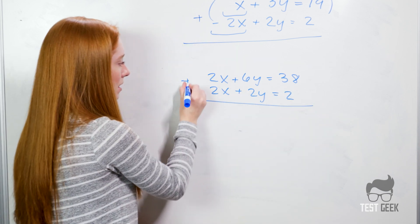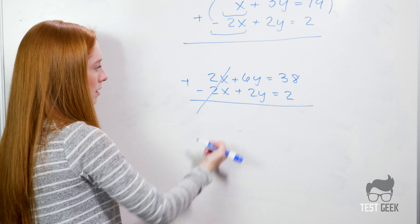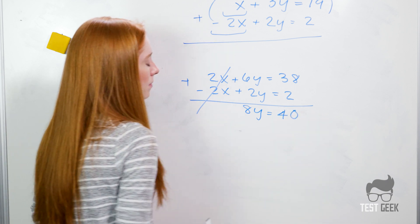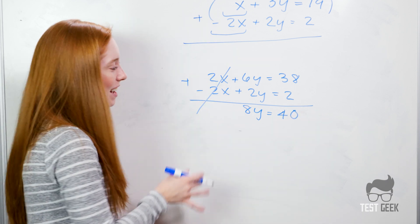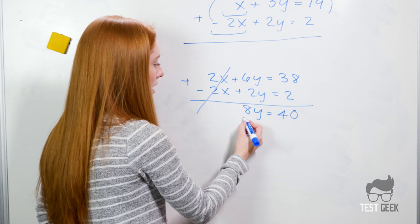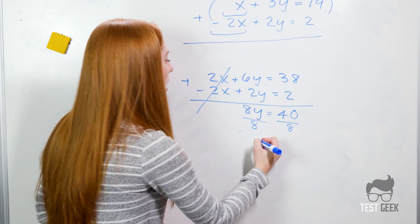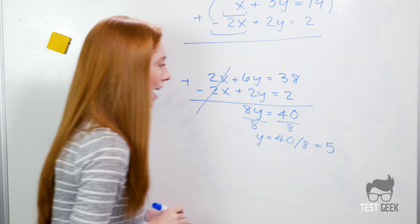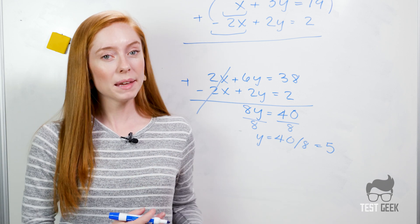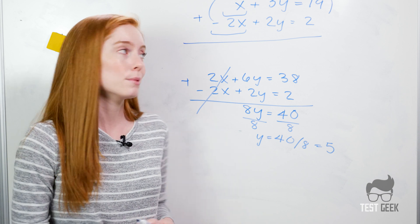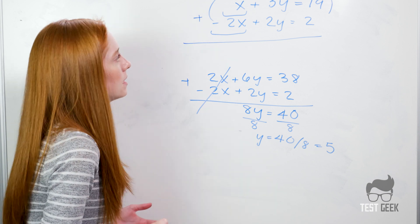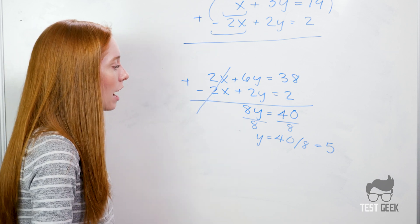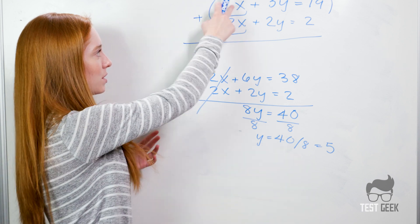Now let's add straight down. These will cancel just like we wanted — 2x minus 2x. Then we get 8y equals 40. We divide both sides by 8 and get y equals 5. So we've solved for y, but they may be asking about x, so let's make sure we solve for x as well. We could go ahead and plug in our y to either of our equations to solve for x. I'm going to pick the easiest one — the first equation.